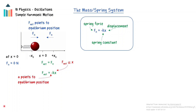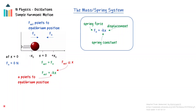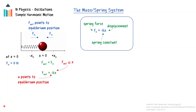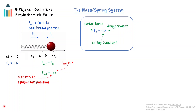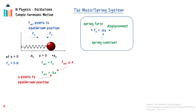According to Hooke's law, the direction of the spring force will be opposite the direction of its displacement. For this system, if the displacement of the mass is to the right of the equilibrium position, the spring force will be directed left, towards the equilibrium position. If the displacement of the mass is to the left of the equilibrium position, the spring force will be directed to the right, towards the equilibrium position. In both cases, the net force will be pointing in the opposite direction of the displacement, towards the equilibrium position. Because the system obeys these two conditions, the mass will move in simple harmonic motion.